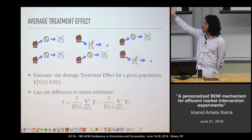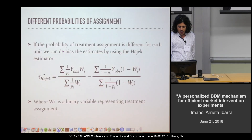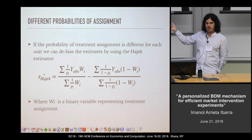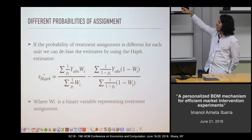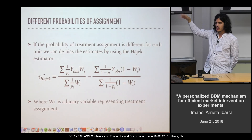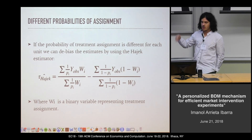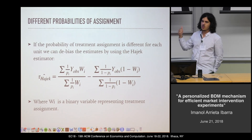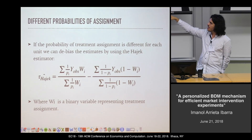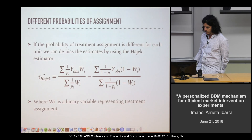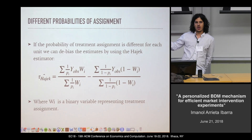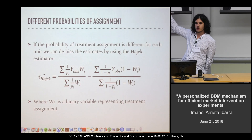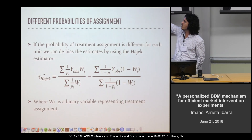A very typical estimator is the difference in means. However, when we assign people to treatment and control, the treatment does not need to be assigned with equal probability. If we have different probabilities of assignment, we can weight our observations by the inverse of the probability of treatment — this is called the Horvitz-Thompson estimator. This estimator is highly volatile, so we can further correct it by dividing over the sum of the weights, which is called the Hajek estimator. Throughout this talk I'll concentrate on the non-weighted Horvitz-Thompson version because it is easier to analyze, and all results apply also to the Hajek estimator.